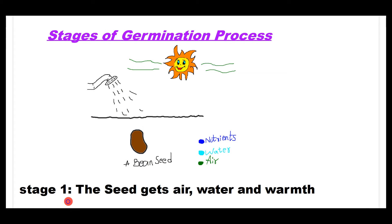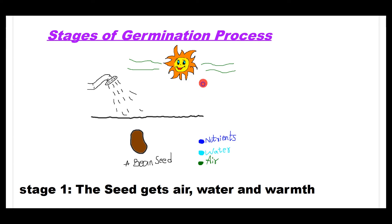Stage 1: The seed gets air, water, and warmth. Here is the seed under the soil, which gets air, water, and sunlight, which will give warmth. A bean, when it gets an adequate amount of nutrients, water, air, and sunlight, it germinates, as we learned in our previous chapter.